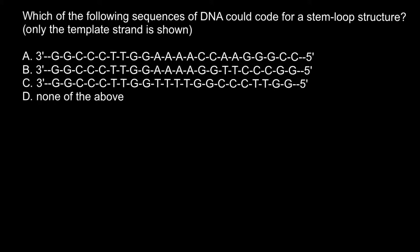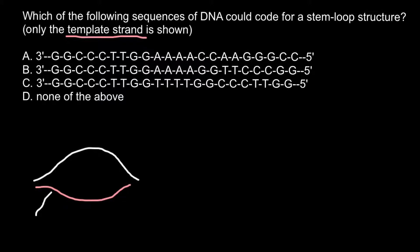Let me first explain what the template strand of DNA is. We have two strands of DNA: one is the template strand and the other is the coding strand. The messenger RNA grows from 5' to 3' end and is elongated in that direction. I'm using the same color for the coding strand as for the mRNA intentionally, because the coding sequence on that strand of DNA would be the same as the mRNA sequence.